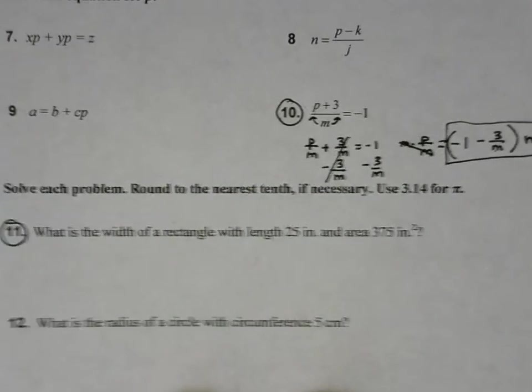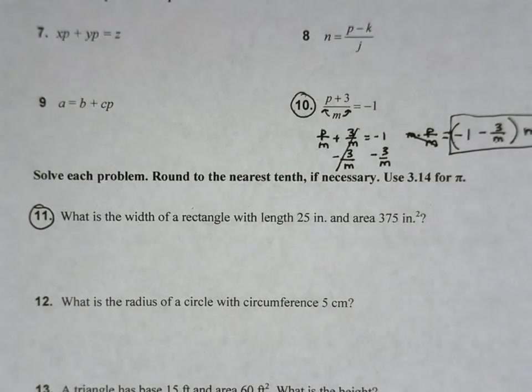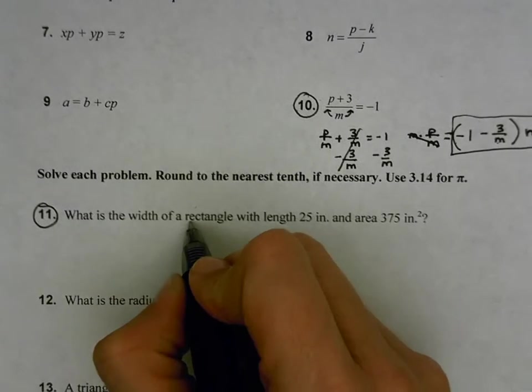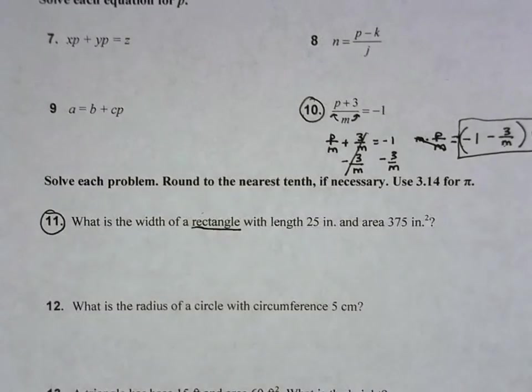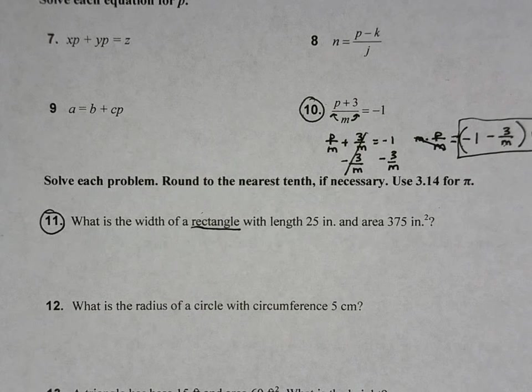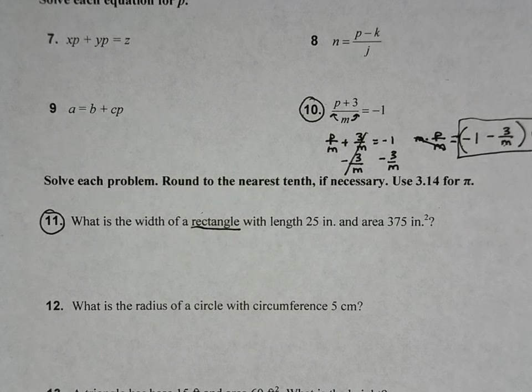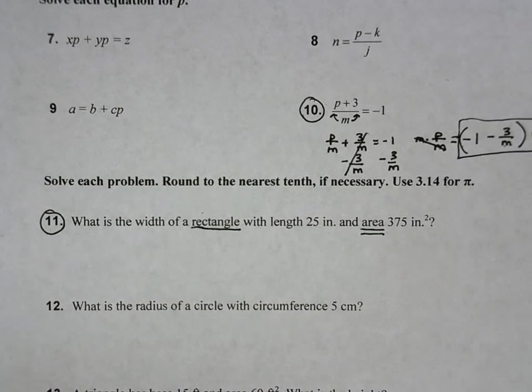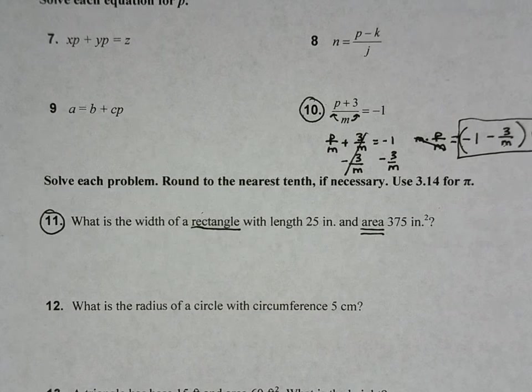Okay, the last problem I picked here was number 11. What is the width of a rectangle with length 25 inches and area 375 inches squared? We are told to solve the problem and to round to the nearest tenth if necessary, use 3.14 for pi. Number 11, we are looking at a rectangle. So you always want to first start with identifying the shape. And then look to see what type of formula are we going to be talking about in this case. And here we've got area, which means I'm going to be utilizing the formula that deals with the area of a rectangle.